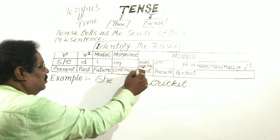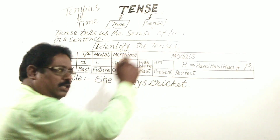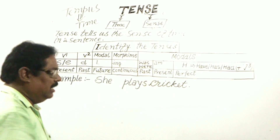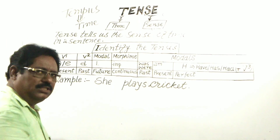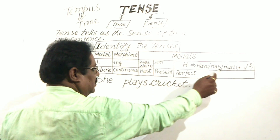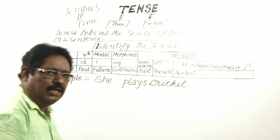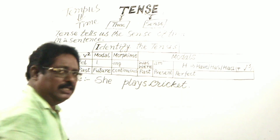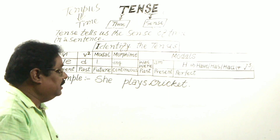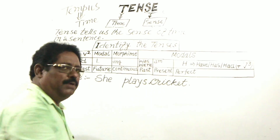Now, was, were, am, has, have, had — these are modals also. Was and were denote past tense. Am denotes present tense. H is the first letter of have, has, or had. H plus V3 — that means have/has plus V3, or had plus V3 — denotes perfect tense.